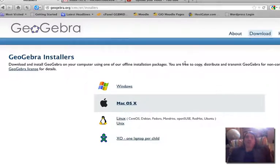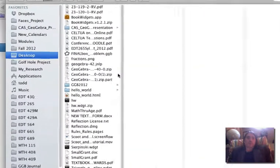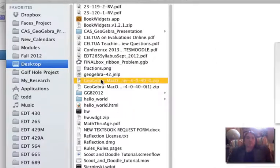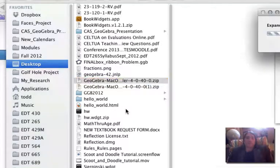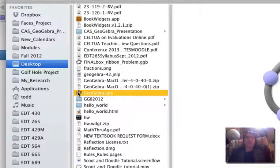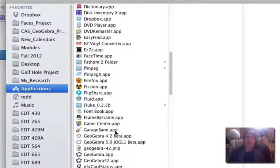Once you click on that, that should download the installer on your computer. Right here, you'll notice on my desktop, I see a zip file called GeoGebra. If you click on it, it should decompress the zip file. You should have a copy of GeoGebra on your desktop. Just drag this to your Applications folder. So now within the Applications folder, you should have GeoGebra.